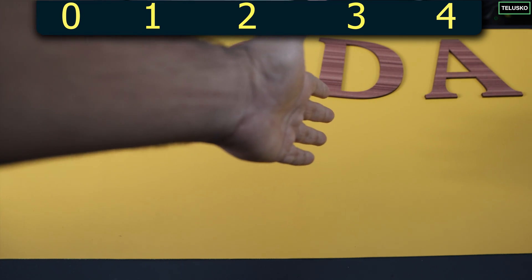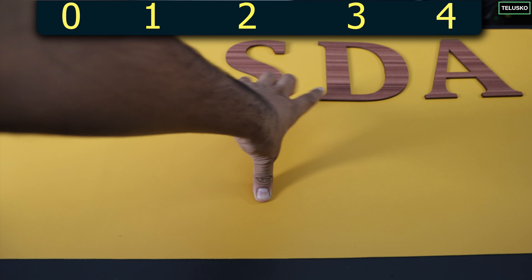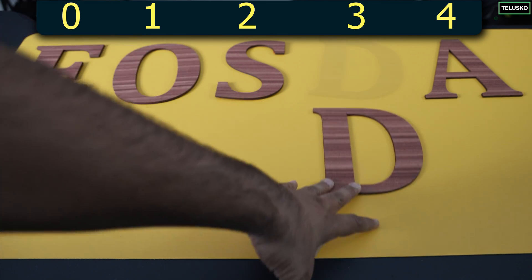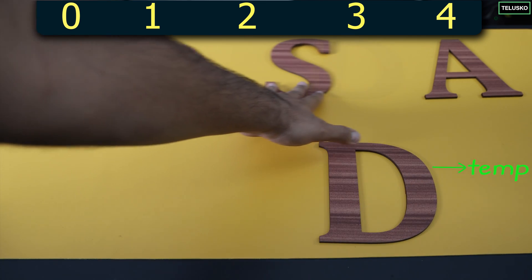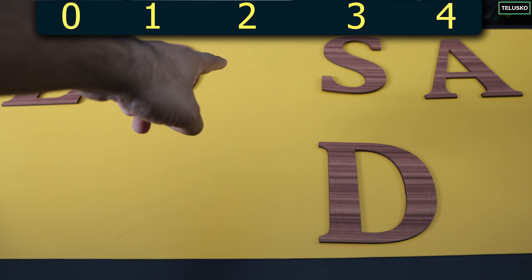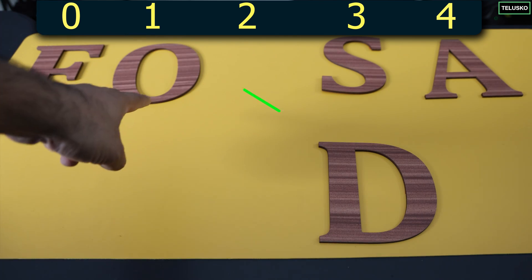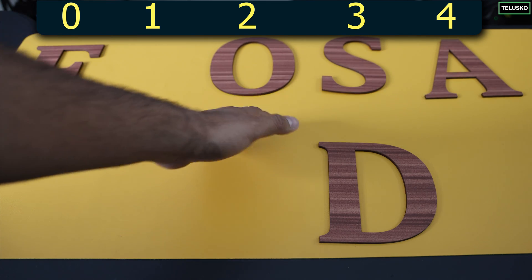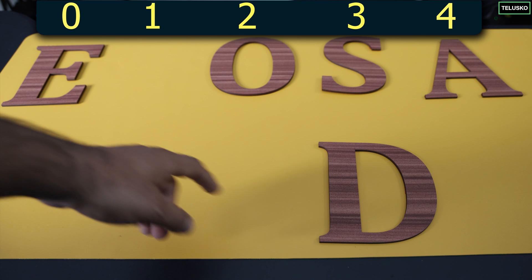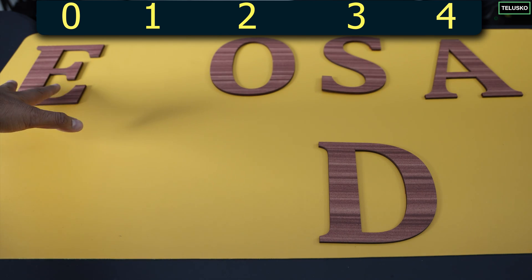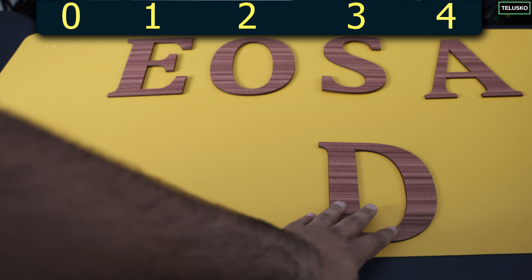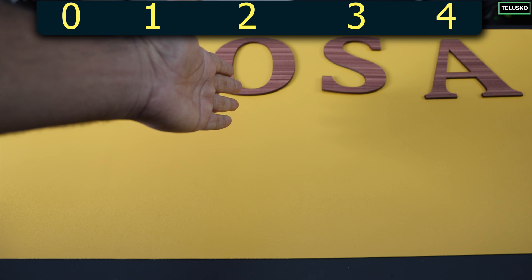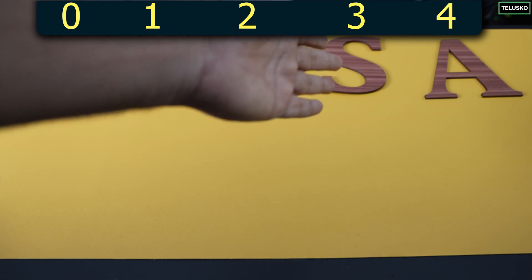Then go for the next element which is D. Compare D with S — D is smaller than S, so take D in the temporary variable and move S. Then compare D with O — is it smaller? Yes. Move O to make space for D. Then there's E before that — move E as well. Then D goes into its correct position. If you compare, the first four elements now look sorted.